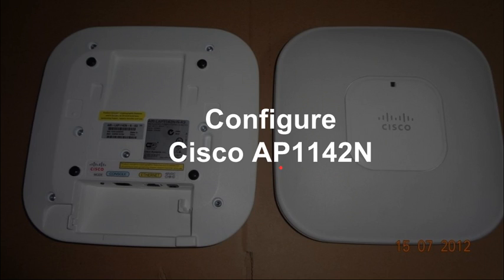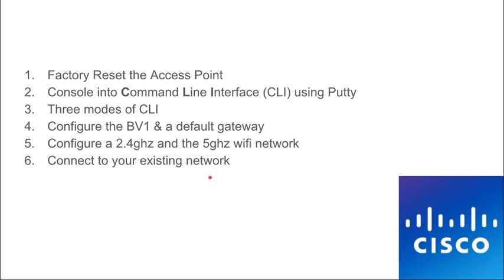This is a basic tutorial on configuring a Cisco access point 1142N. We're going to factory reset it to eliminate any unknown passwords, then use PuTTY to get into the command line interface. There are three modes of the CLI we need to know before configuring anything. We'll configure the Ethernet port, set up a default gateway, configure the 2.4 GHz and 5 GHz Wi-Fi frequencies, and then plug it into your existing network.